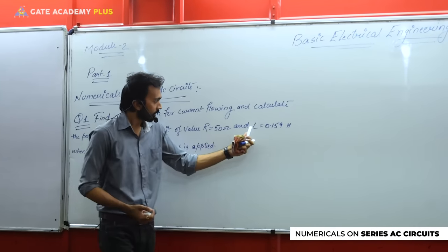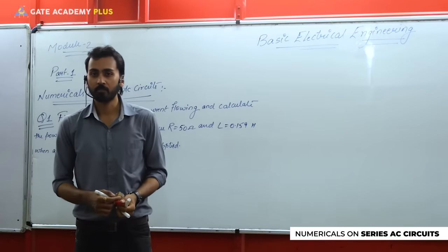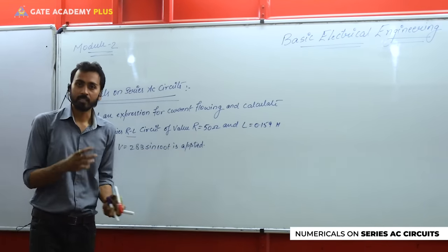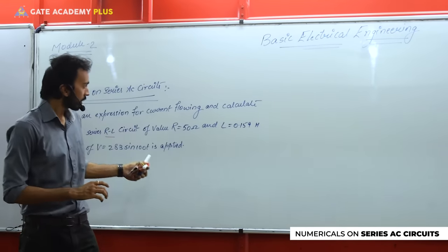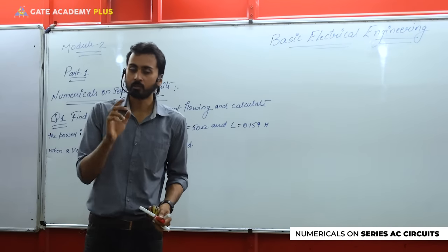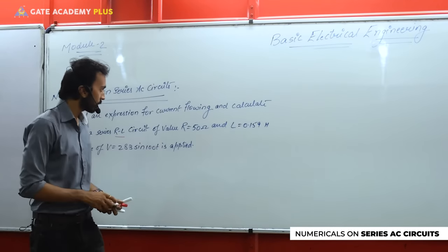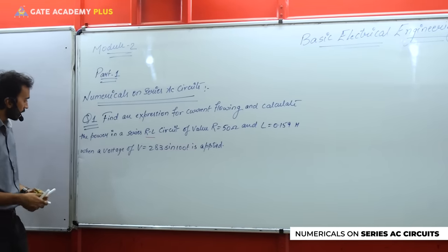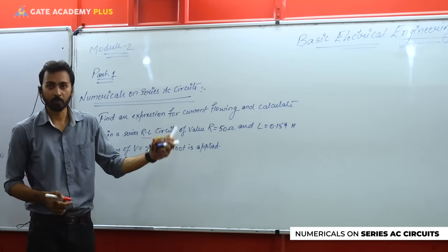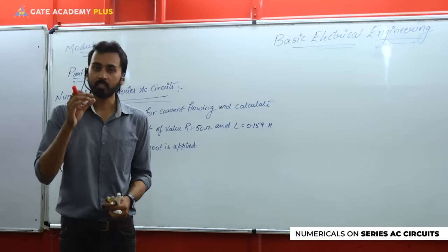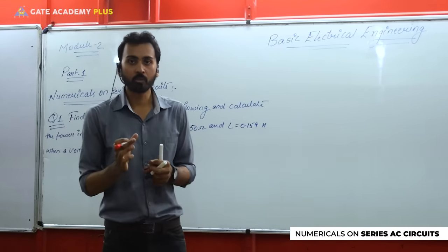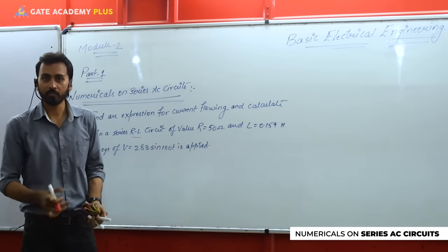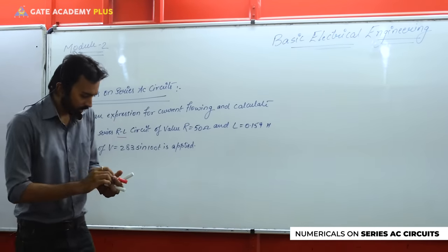Resistance is given as 50 ohms and inductance as 0.159 henry. Note carefully: to calculate impedance in the circuit, you don't need inductance — you need inductive reactance. So when solving, quickly convert inductance to inductive reactance using XL = 2πfL or ωL. The voltage given is V = 283 sin(100t), which is in the standard instantaneous form Vm sin(ωt). From this, two data points are directly available: Vm and ω.